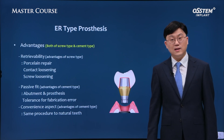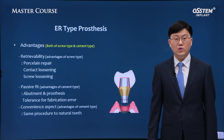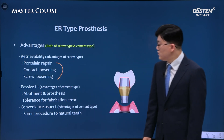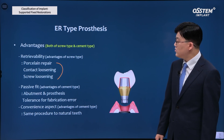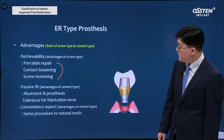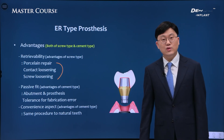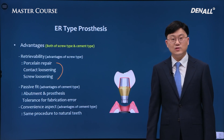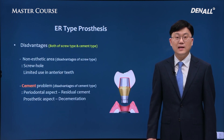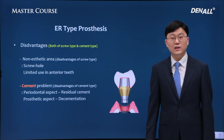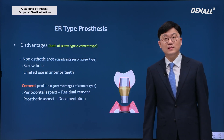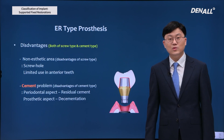ER type prosthesis is a combination of the advantages of screw type and cement type. The advantages of screw type — porcelain repair, contact loosening, and screw loosening — can be resolved very easily. On the other hand, it is easy to get passive fit and prosthodontic treatment can proceed similarly to cement type with natural teeth, so it's quite convenient. The downside of ER type is that because it has a screw hole, it cannot be used in aesthetic zones, and because it uses cement, there can be potential periodontal issues from residual cement.